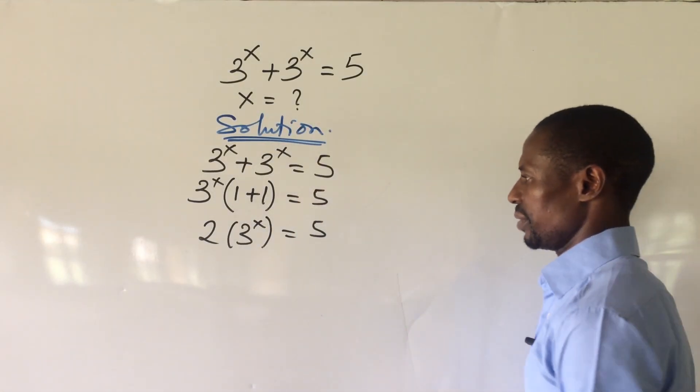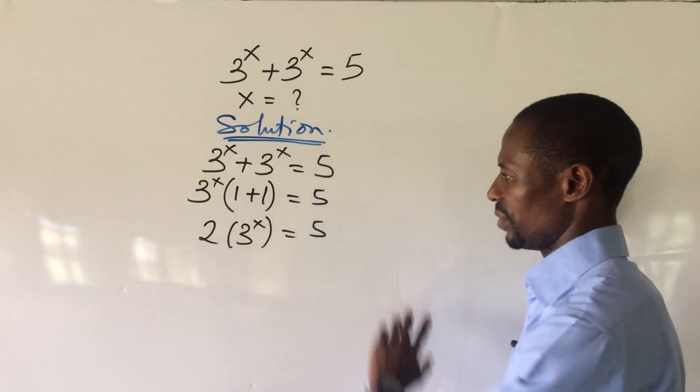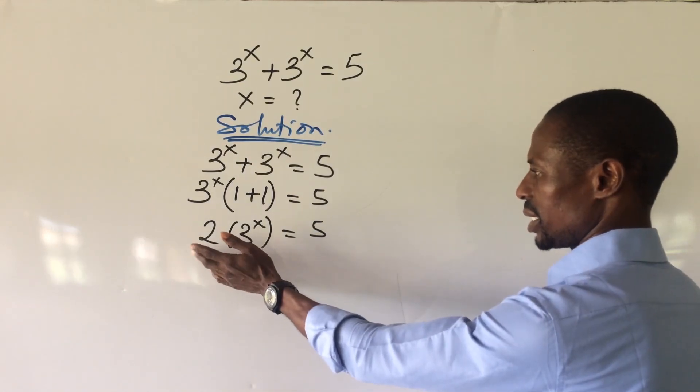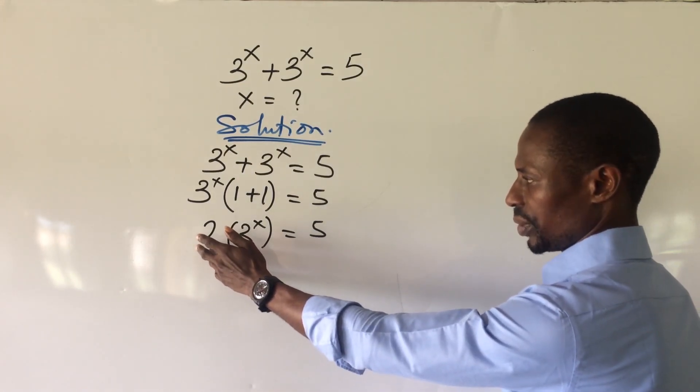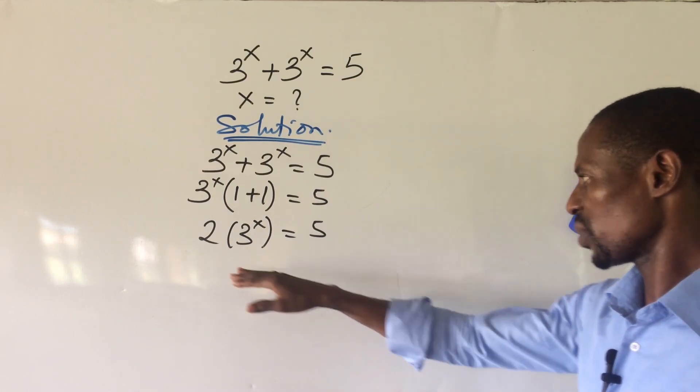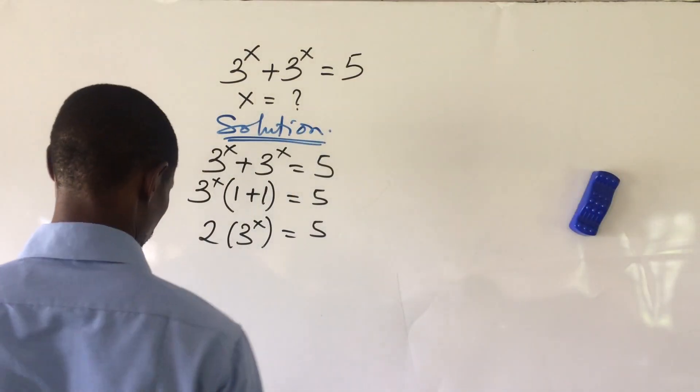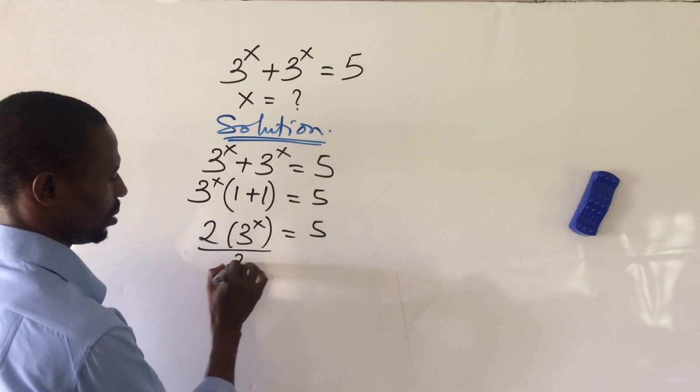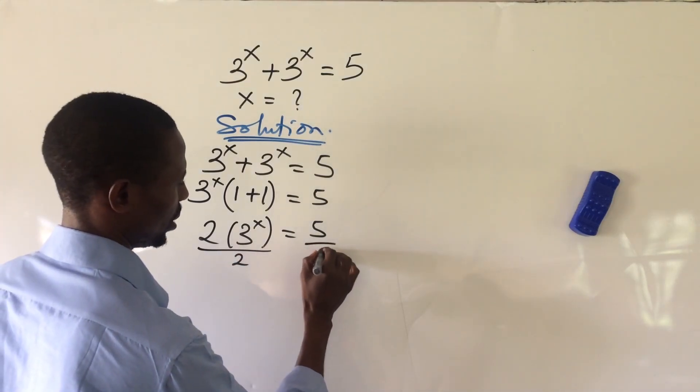Here we're looking for x, and so the first thing to do here is to eliminate this constant 2. So by dividing through by 2, if we divide both sides of the equation by 2, we're going to have this all over 2 and this all over 2.